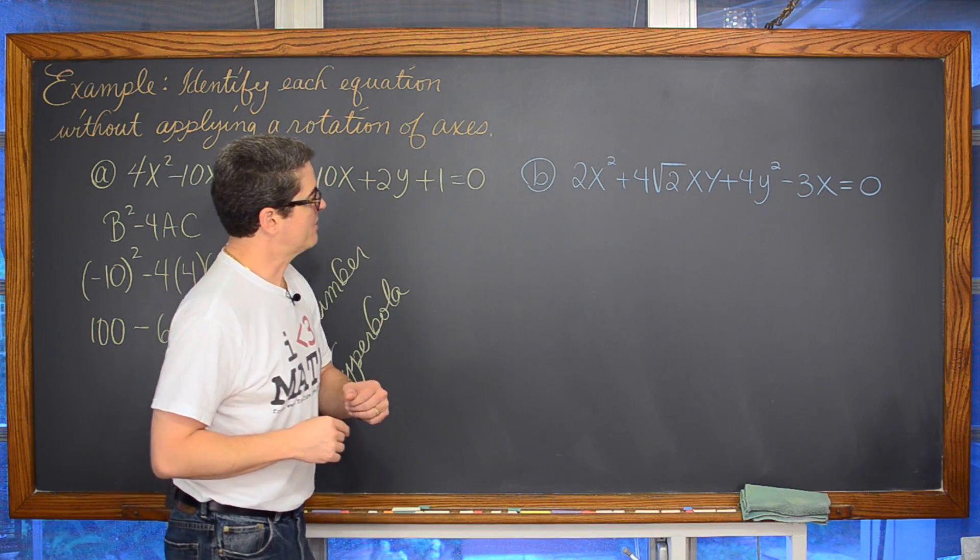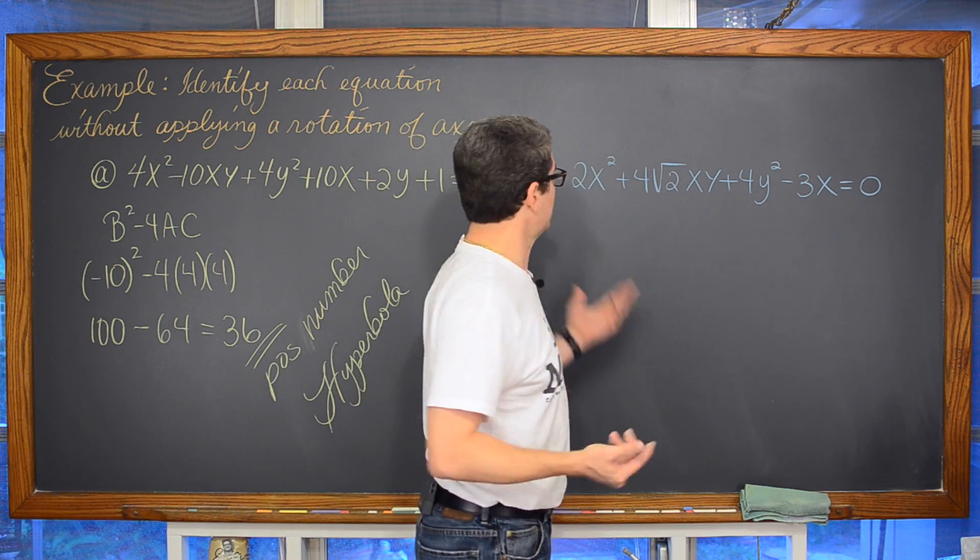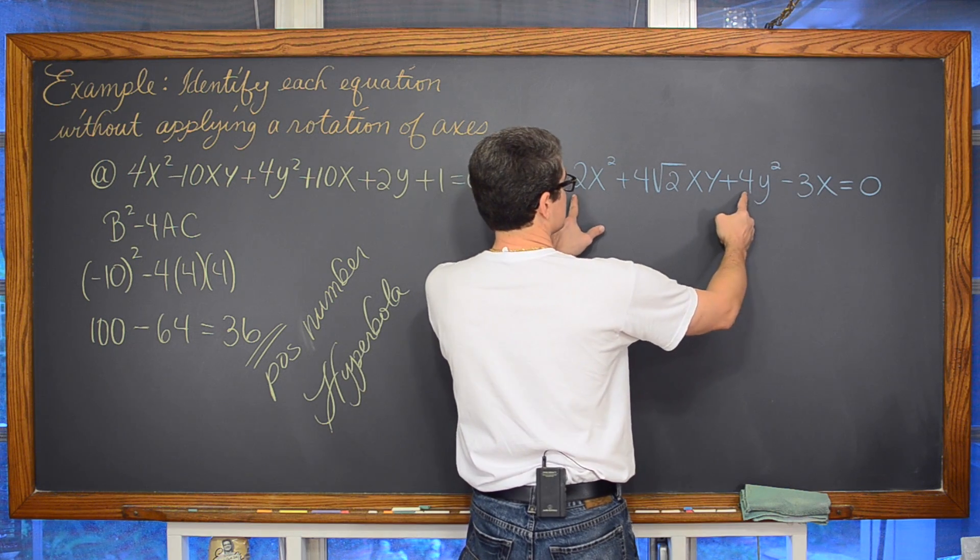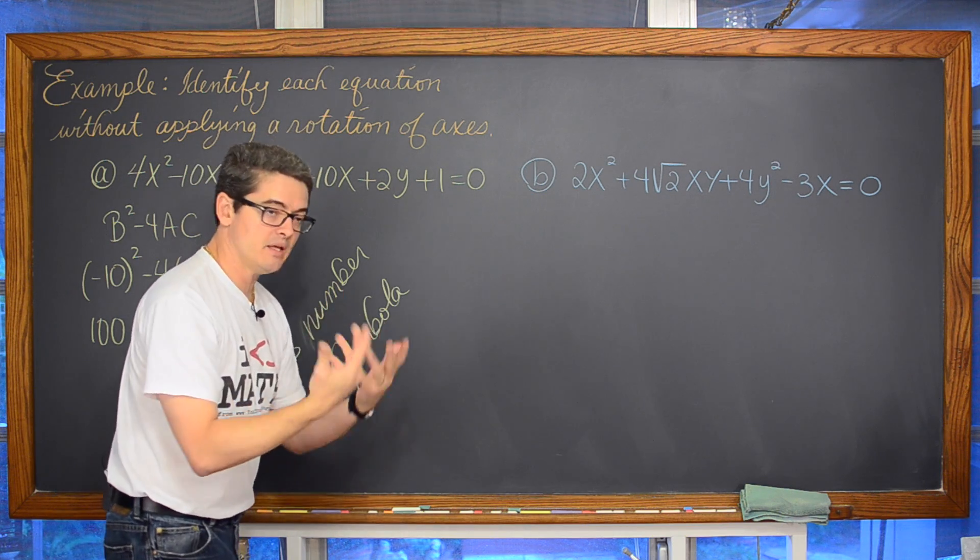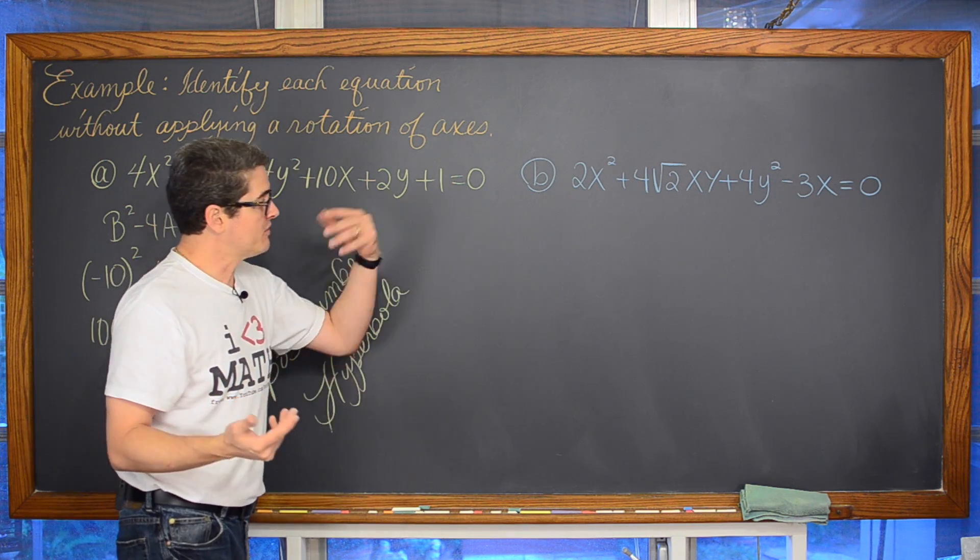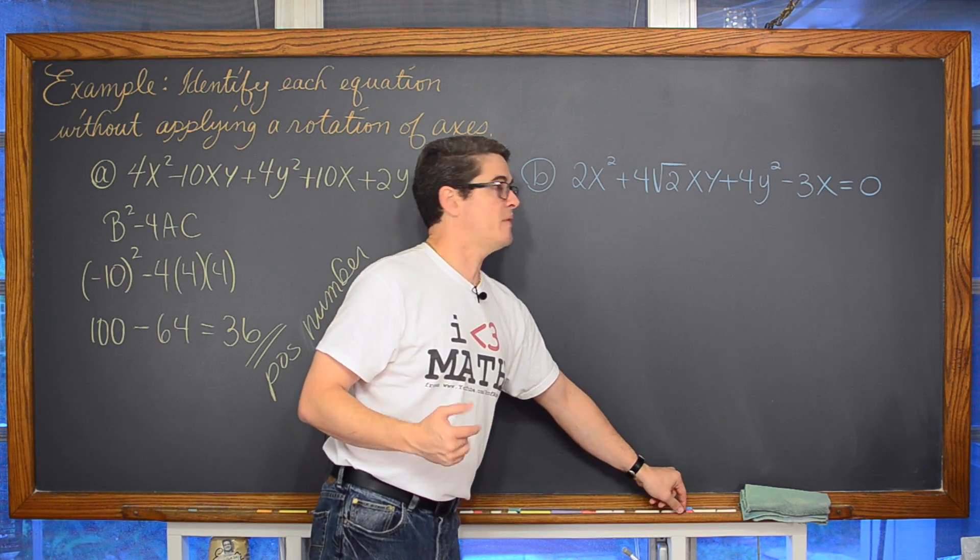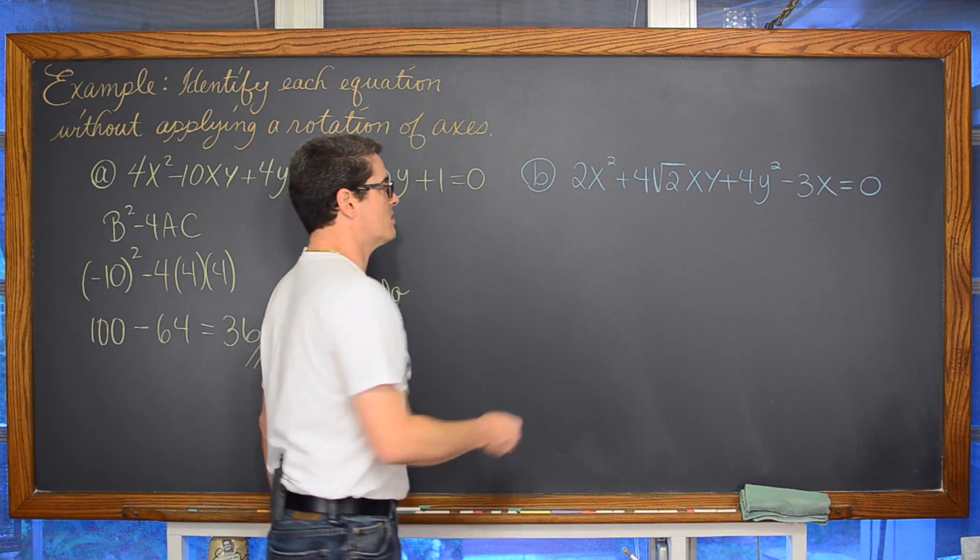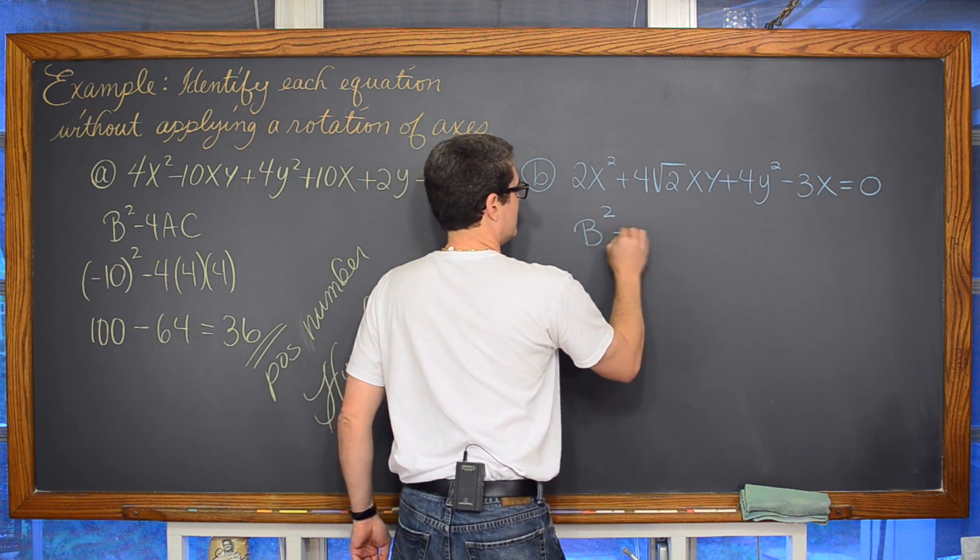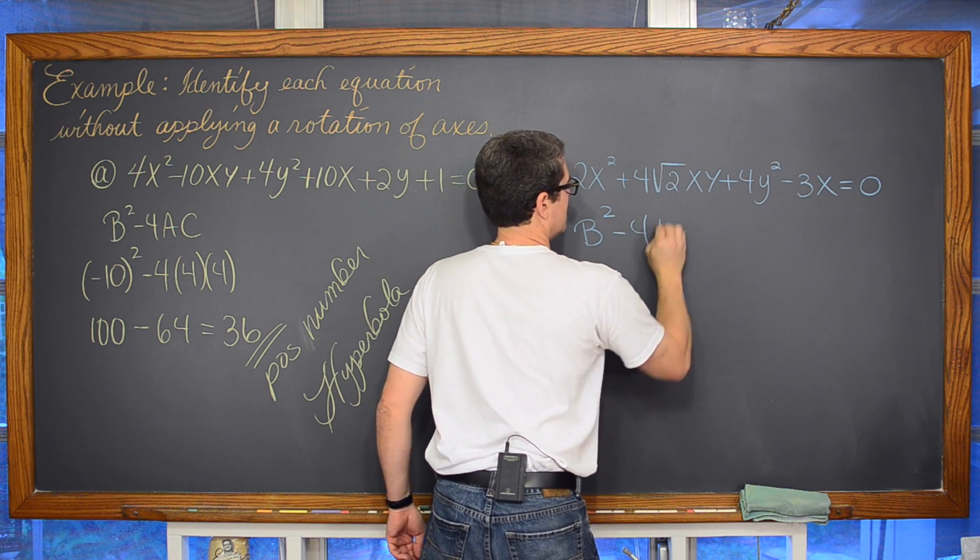Over here, we've got an xy term. We again have coefficients on our two squared terms which are positive, but they're not the same coefficients. So again, up until now I would have looked at that and said that is going to be an ellipse. But you've got an xy term. You've got to check it. So b squared minus 4ac.